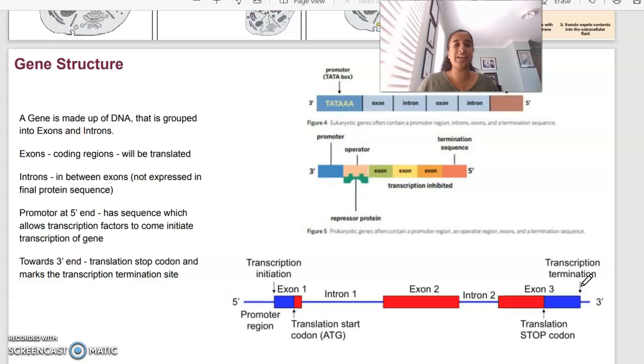Looking at gene structure, a gene is basically a segment of DNA. In terms of a gene, it's made up of introns and exons. So introns are your non-coding regions and your exons are your coding regions. Your exons are the part that are going to be translated. We have what we call a promoter at the five prime end. So that's just the location to show you that's at the beginning. And then at the three prime end, we have a stop codon, which is going to say that we are no longer transcribing or translating.